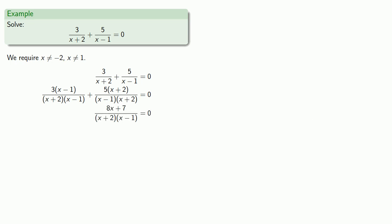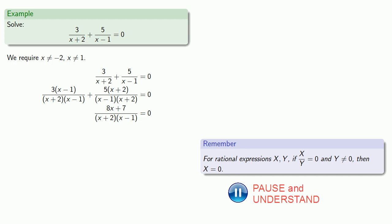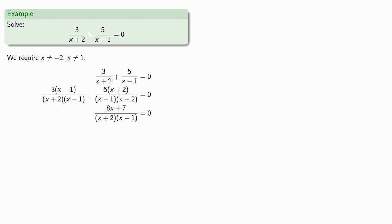And so now we have rational expression equal to 0. And so for a rational expression, if x over y is equal to 0 and y is not equal to 0, then our numerator must be 0. So we'll set our numerator equal to 0 and solve. And we should check that this is not one of the forbidden values, and it isn't. And so x equals negative seven eighths will be the solution.